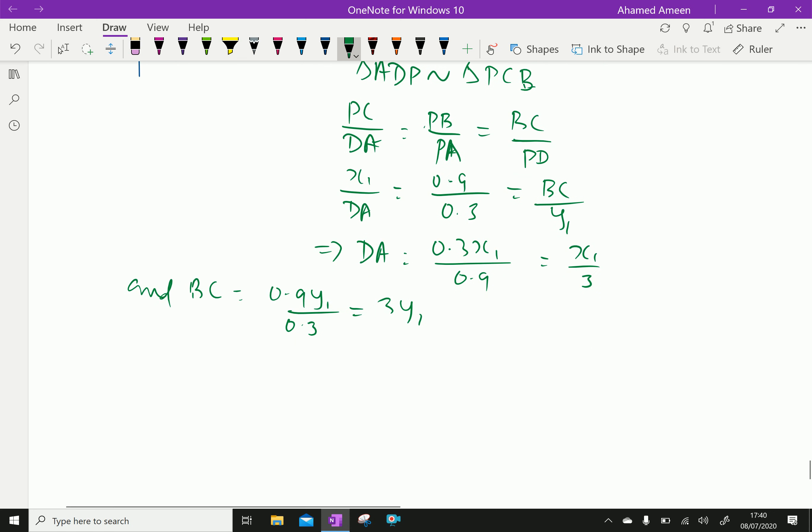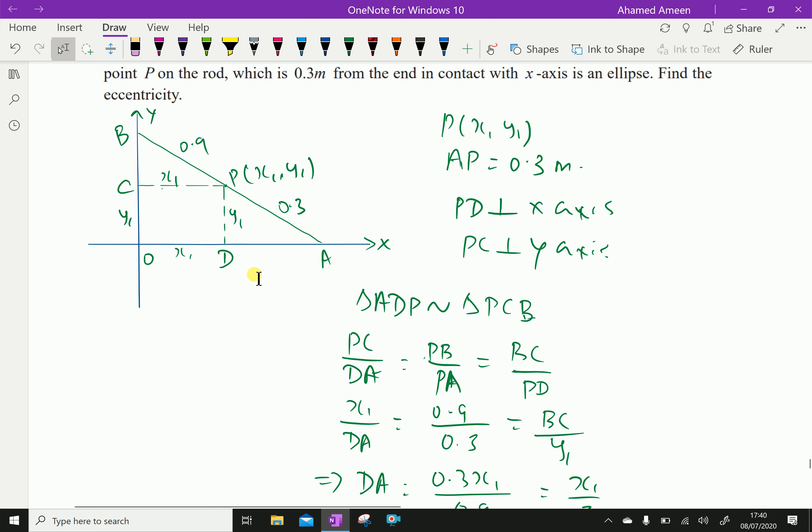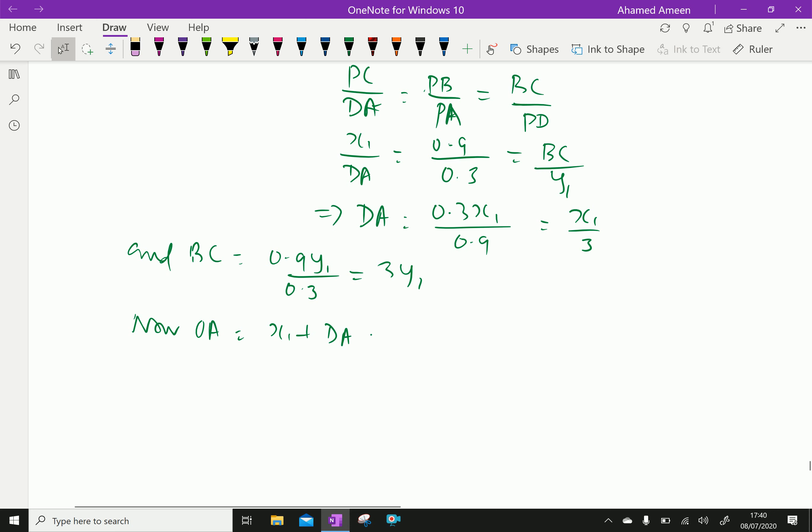Now, OA is x₁ plus DA, x₁ plus x₁ by 3, which is equal 4x₁ over 3.